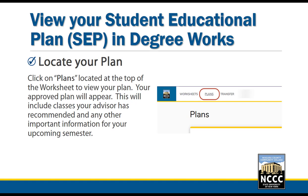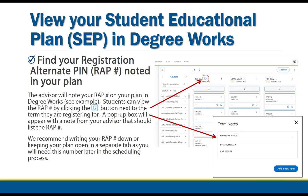Once you have logged in to DegreeWorks, locate your plan by clicking on the Plans link at the top of the page. Your educational plan includes recommendations from your advisor regarding what courses you should take for the next semester, and it also includes your Registration Alternative PIN or RAP number. Keep note of this RAP number by either writing it down or leaving your plan open in a separate tab.